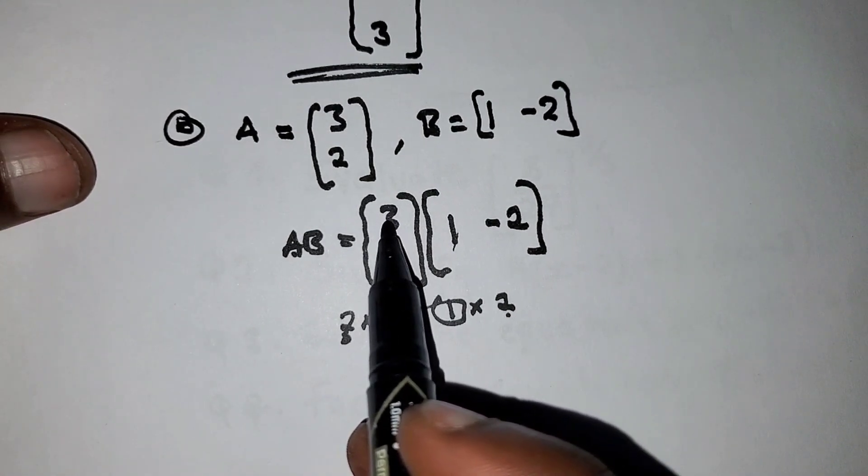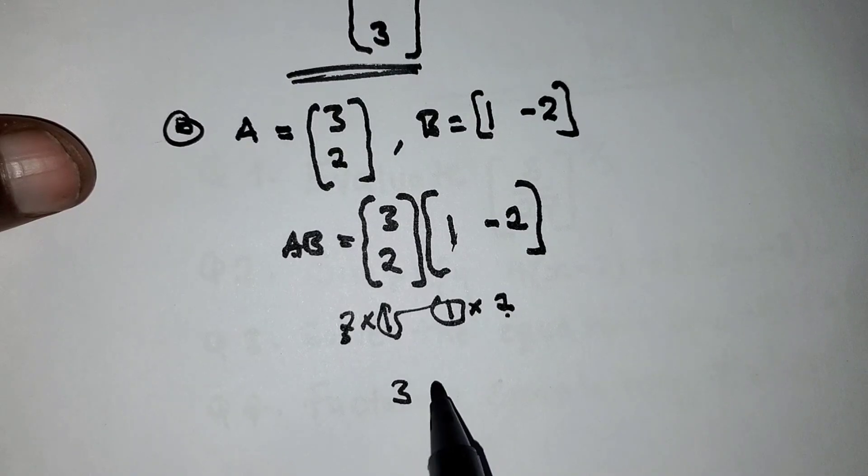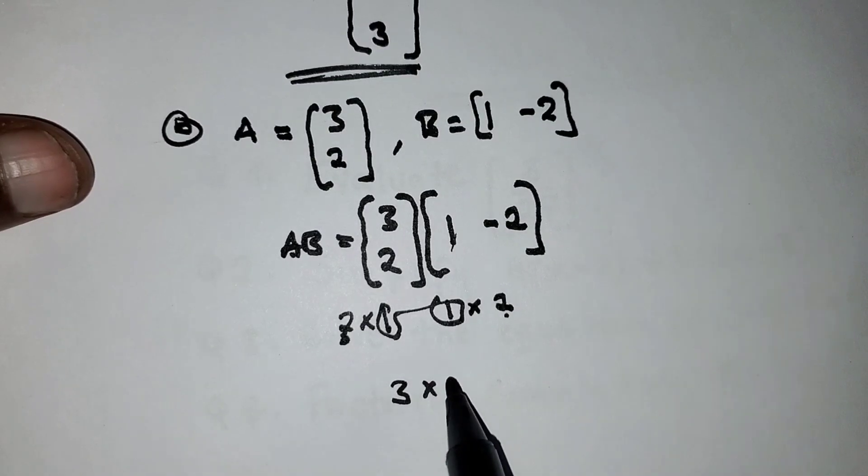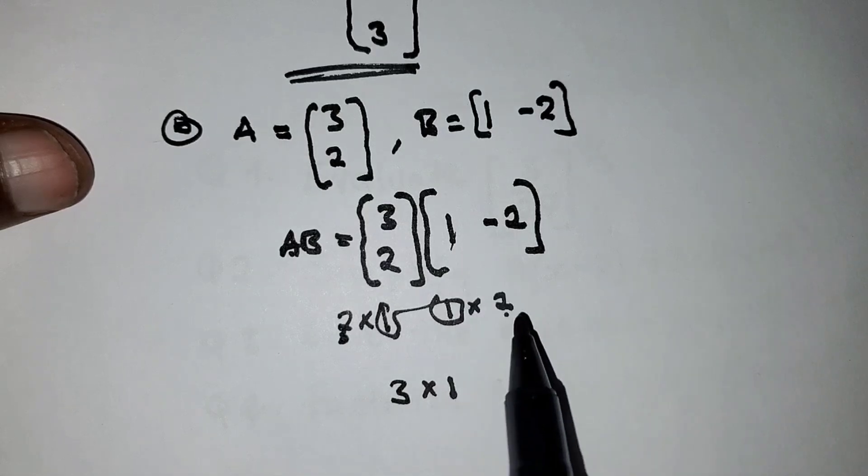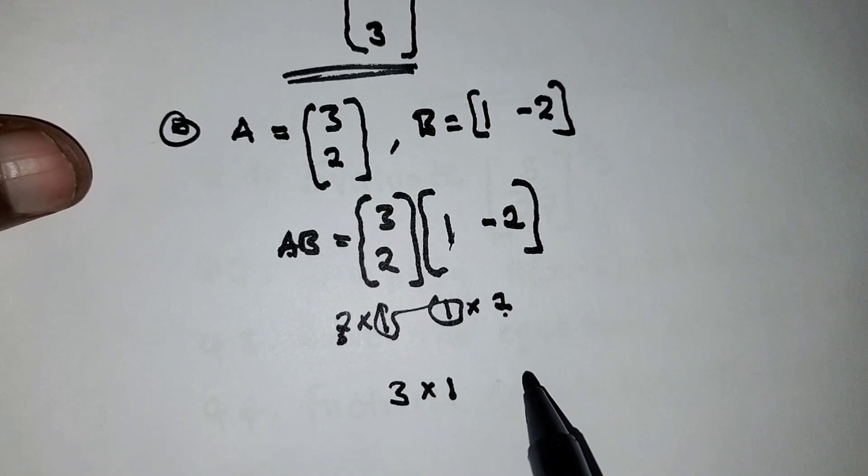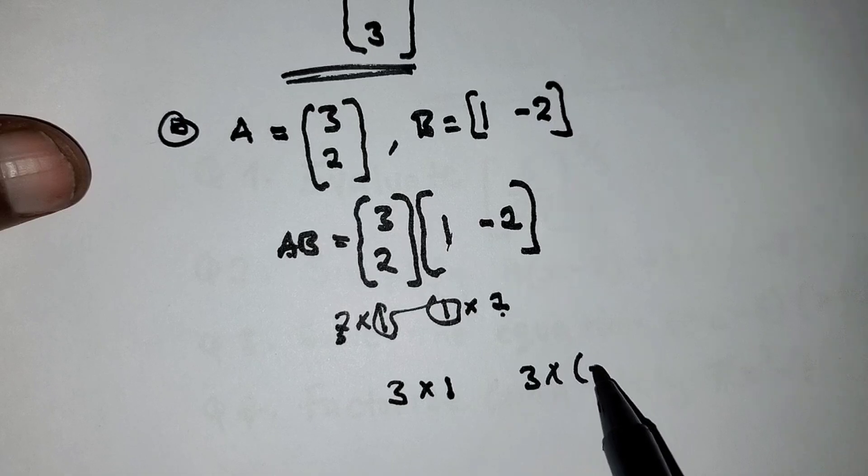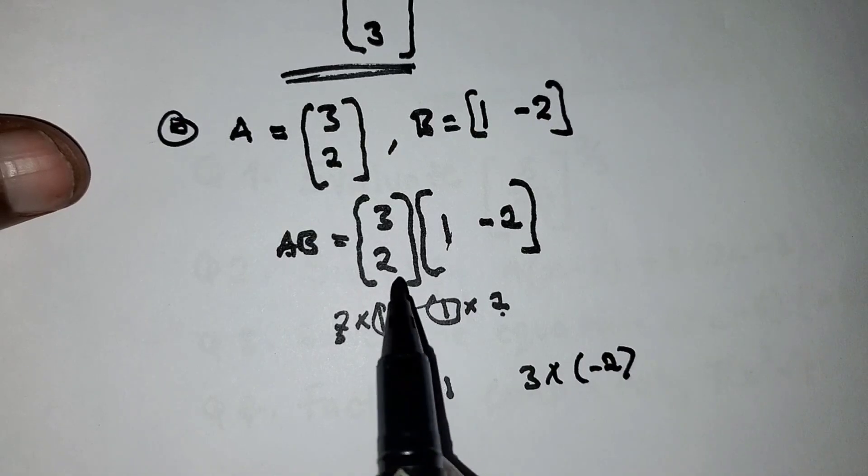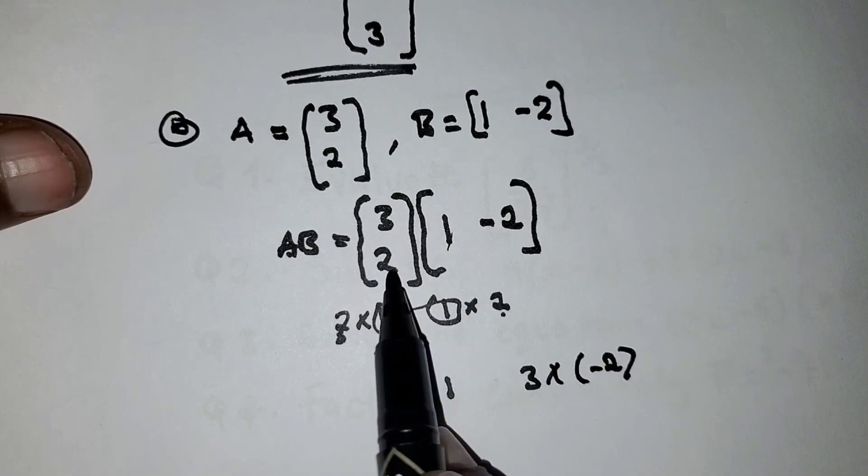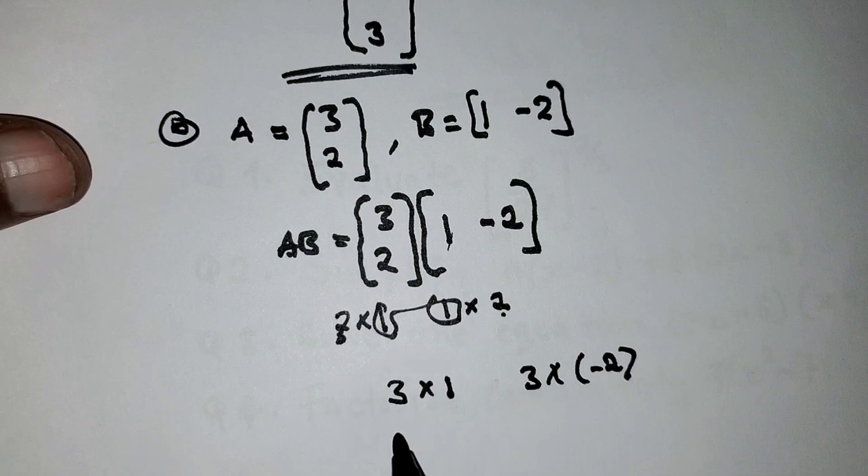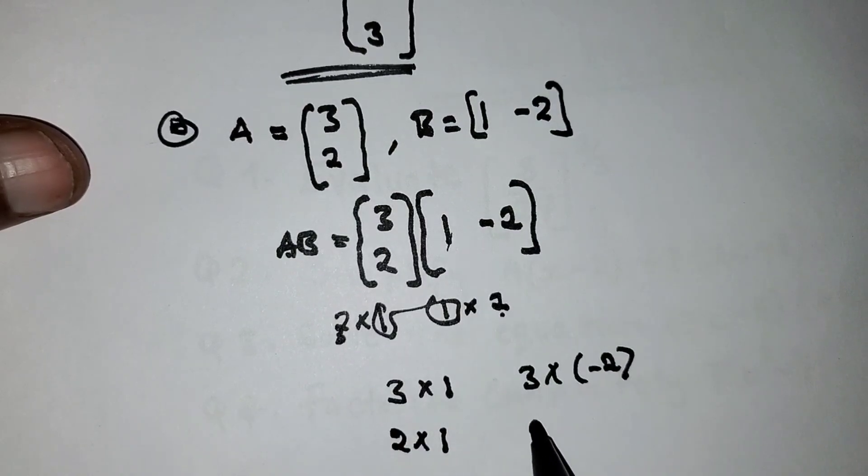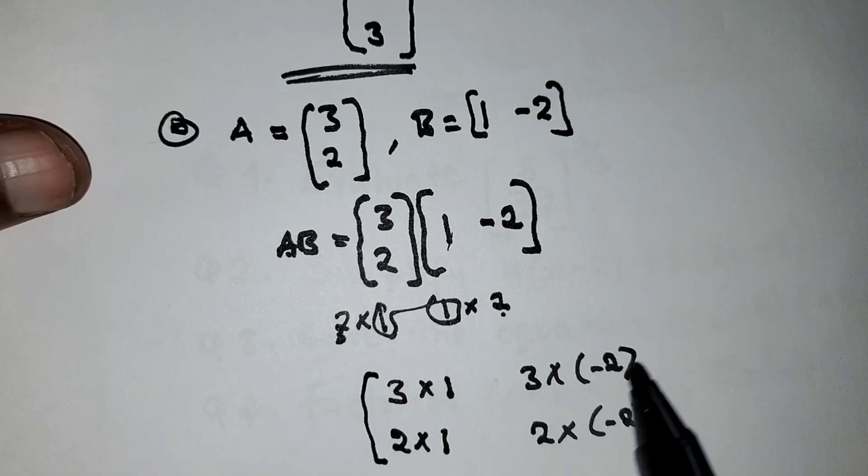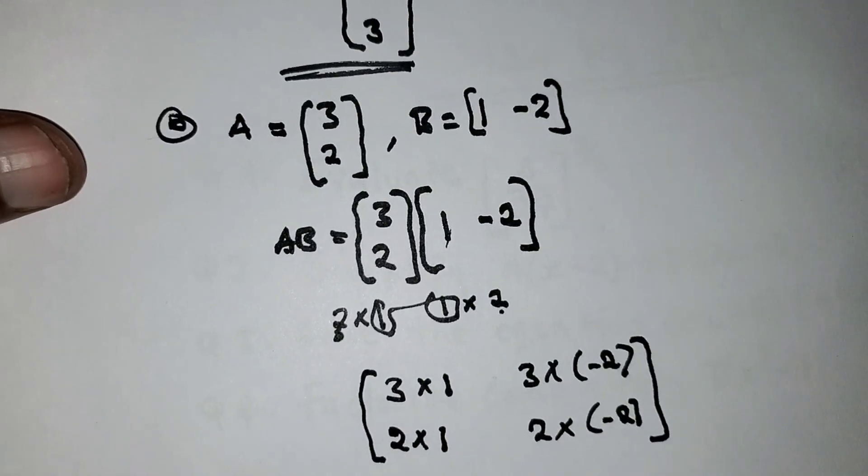This will be 3 times 1, then we go to another one: 3 times -2. Then we come down to the second row: 2 times 1, then here it will be 2 times -2.